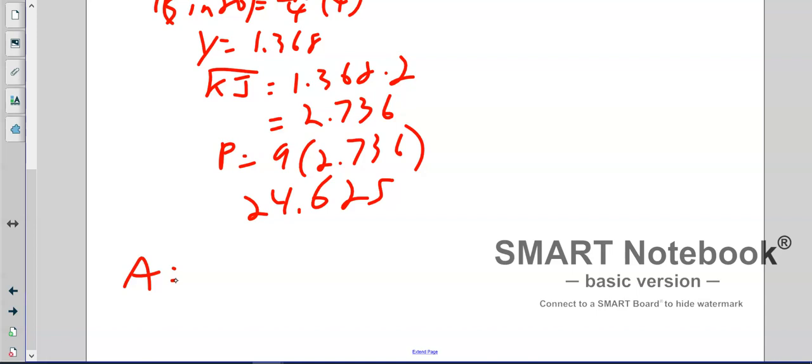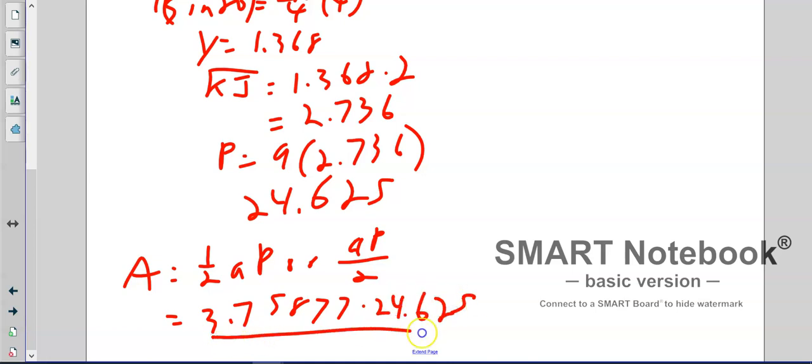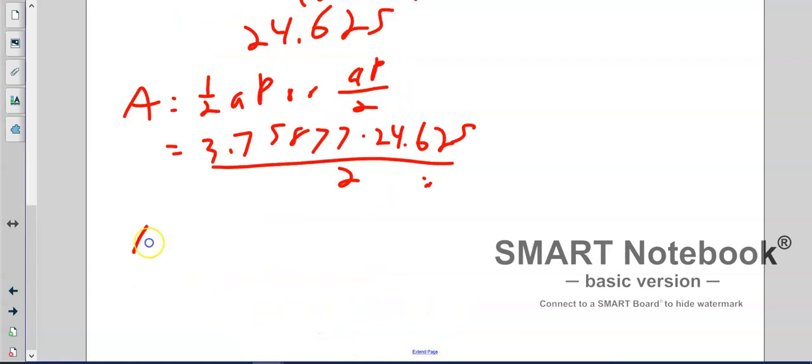And now finally we can do the area. None of these calculations are hard, it's just you have to do a lot of steps to get to it. Remember, the area is one half AP, or AP divided by 2. So we take the two numbers: 3.75877 times 24.625, all that divided by 2. And we end up with an area of 46.3 square units. This didn't give us meters or inches, it just said units, so we just used units.